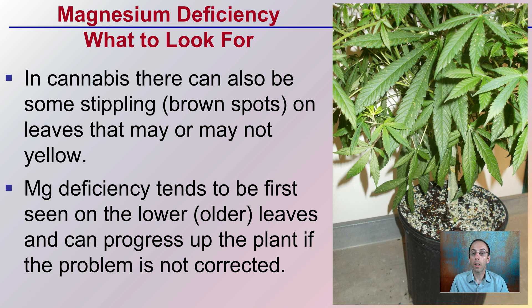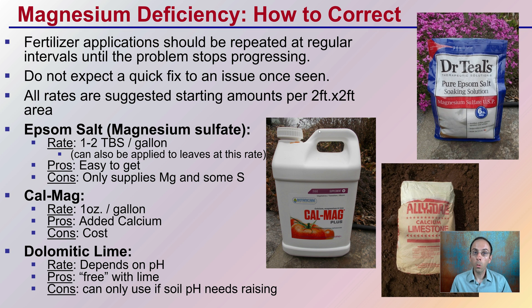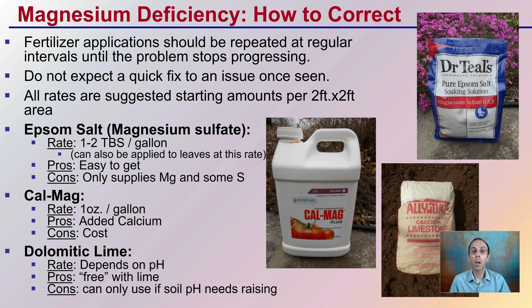It's important to recognize when it's occurring at the lower leaves — it could be magnesium, so start feeding some magnesium fertilizer. Applications should be made repeatedly at regular intervals until the problem stops progressing, because it might take a little while for that to build up in the plant. Don't expect a one-time application to fix the problem.